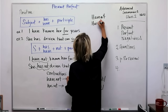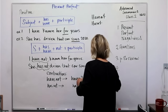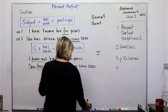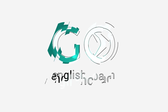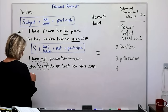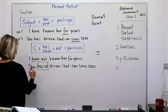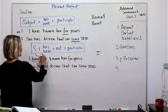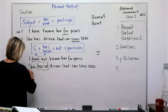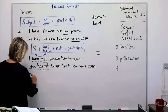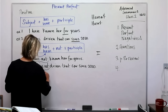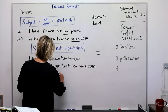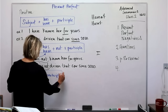Now let's look at how we create questions. The formula changes: we move 'have' or 'has' to the beginning, then the subject, then the participle. So 'has she driven that car since...' — we switch the order. The formula is: have/has + subject + participle.